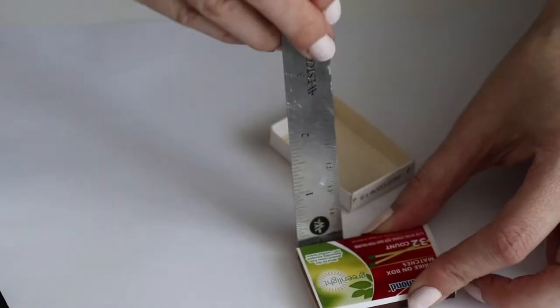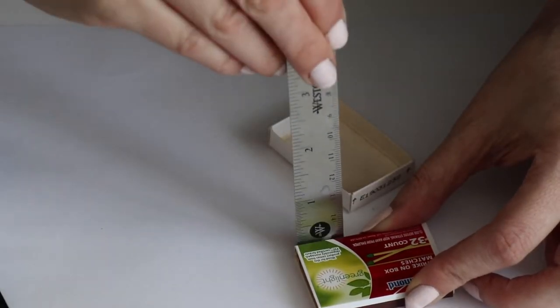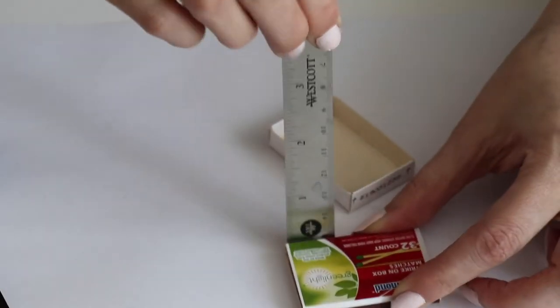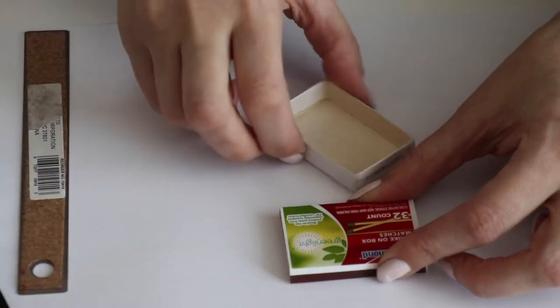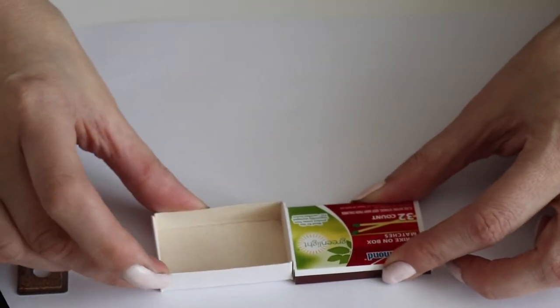Trim the bottom half of the box to leave small tabs so that you can later glue the top to them. Place the two halves together and re-measure to make sure it is thin enough.